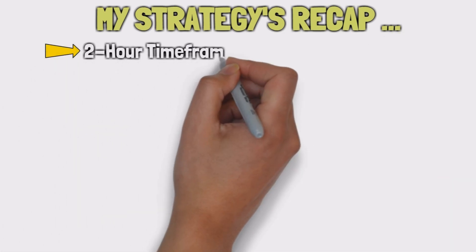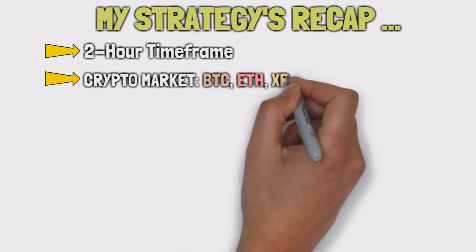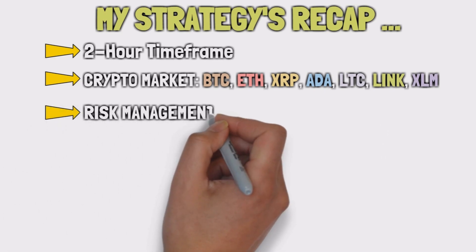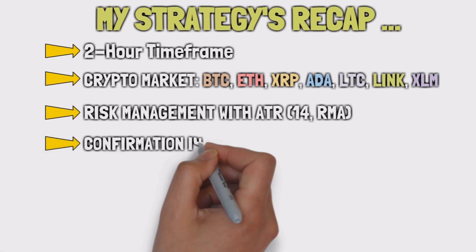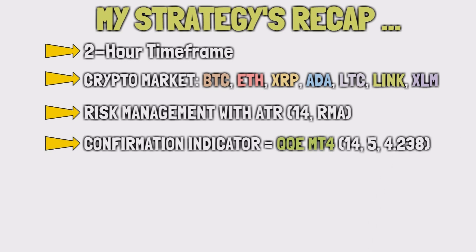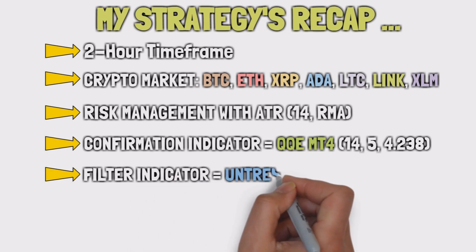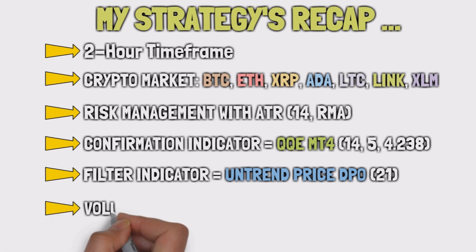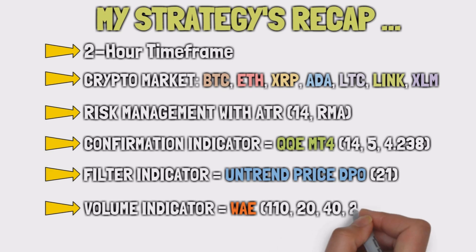My strategy will be for the 2-hour timeframe. I will apply it in the cryptocurrency market, and these were the cryptos that I chose to carry out the backtests on the previous episodes to create it. My risk management will be done using the ATR indicator with the default settings. My confirmation indicator, which provides the entry signals, will be the KQEMT4 with the settings 14, 5 and 4.238. My filter indicator, which eliminates false entry signals from the KQEMT4, will be the untrend price DPO with a period of 21. My volume indicator, that protects me from entering in the sideways market, will be the Wadaratar explosion with the settings 110, 20, 40, 20 and 2.